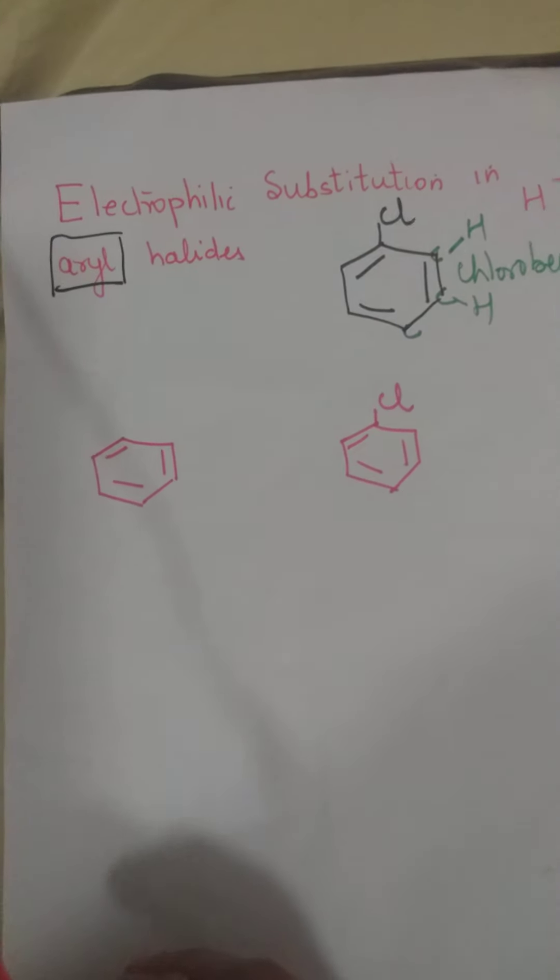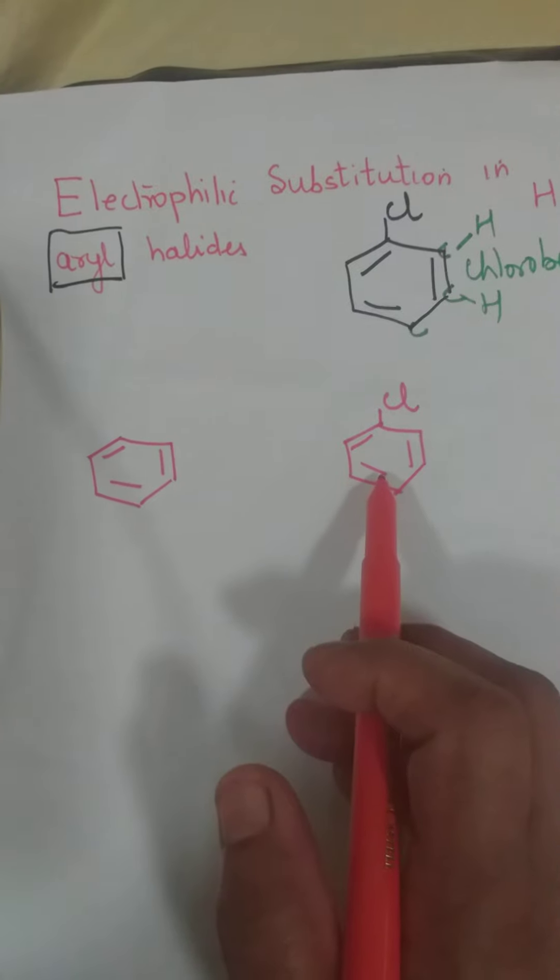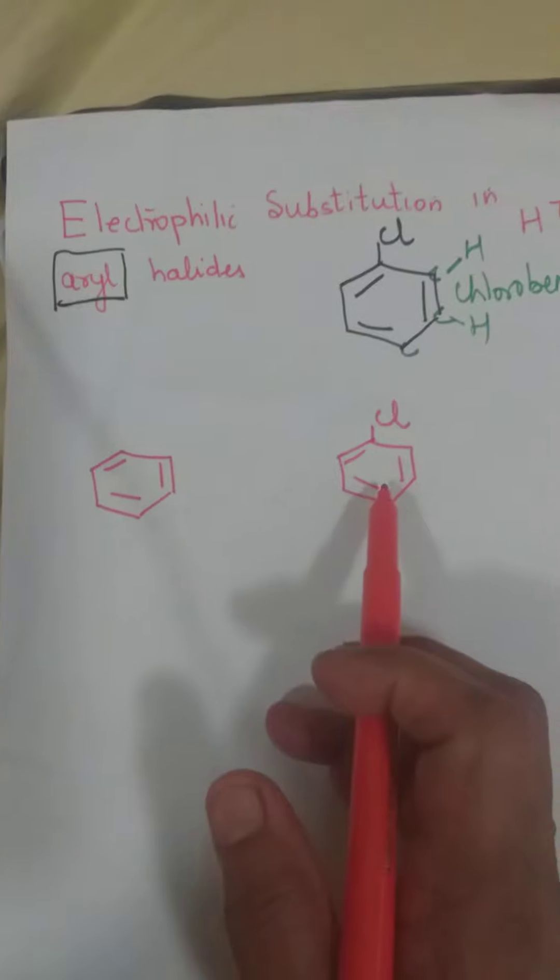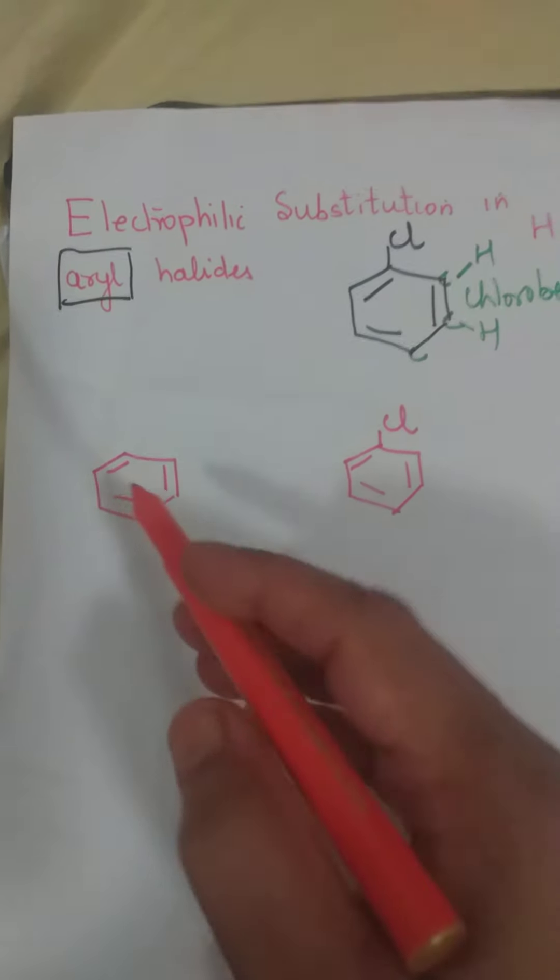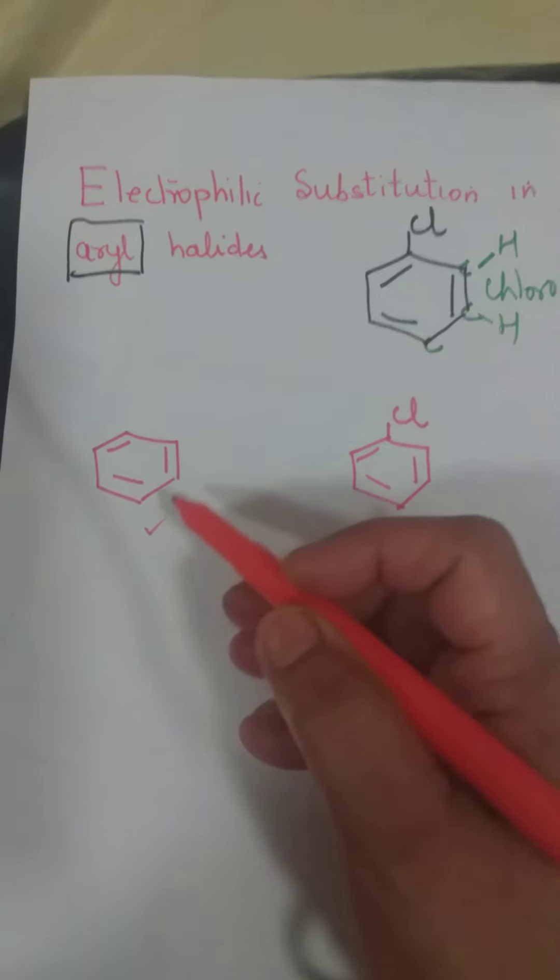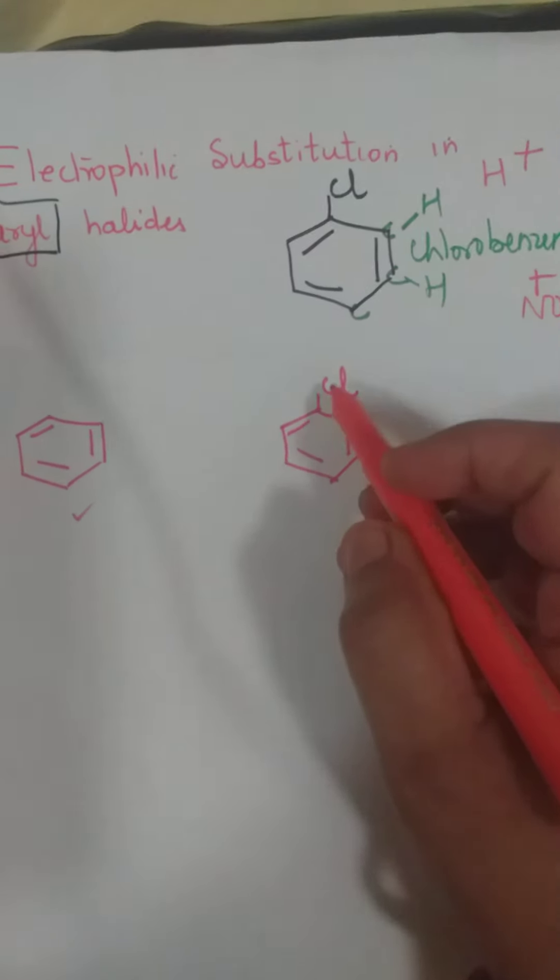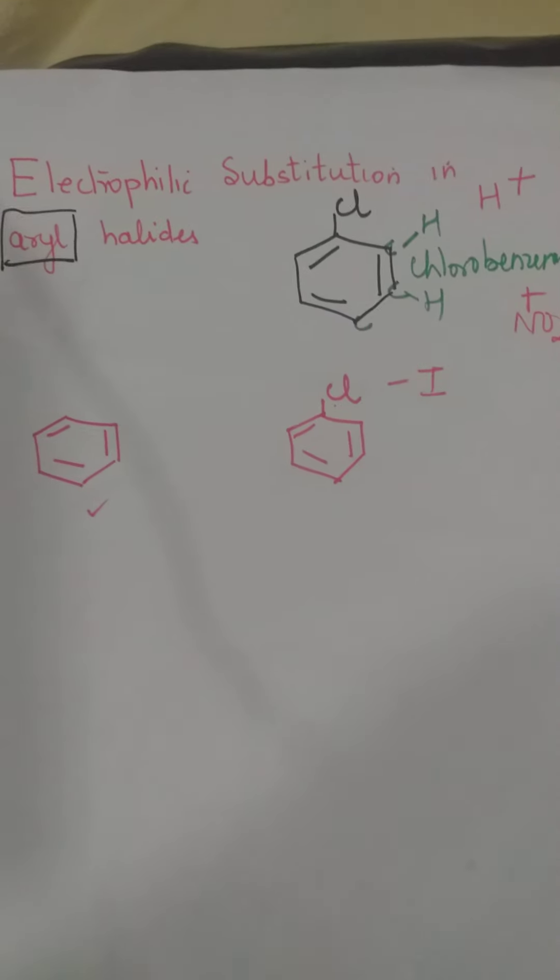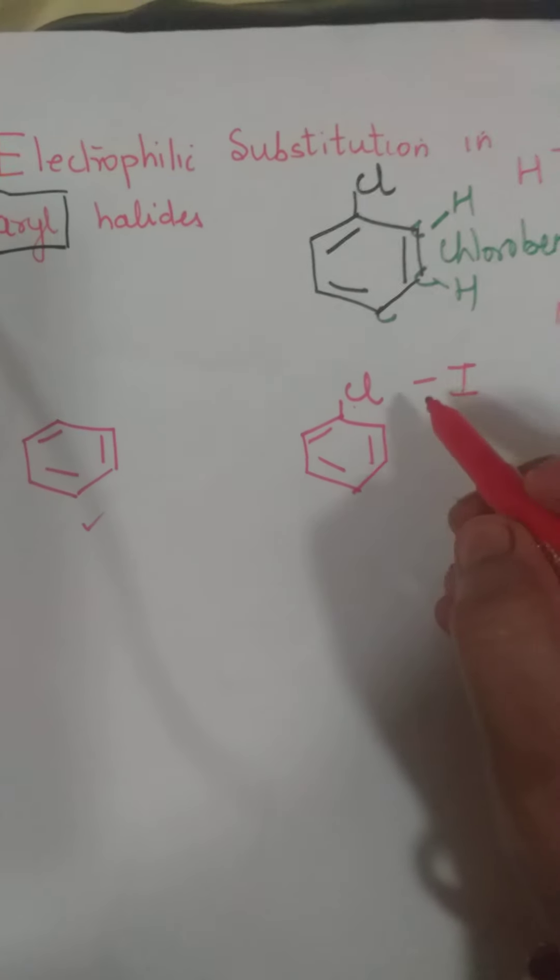Ab, ek baat hum ko yaad rakhna hai ki, benzene aur chlorobenzene ya, benzene aromatic ring and aryl halides mein, which will give faster electrophilic substitution. Then, it is benzene which will give faster reaction. Reason iska aisa hai ki, Chlorine jo hai, it shows minus I effect. Aapko aap tak malum hoga, aapne inductive effect ka video to dekha hi hoga.